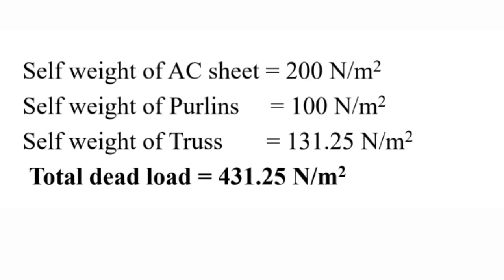This is the self-weight of the AC sheet roofing material, which is 150 N per m². Adding the self-weight of the truss as well, we compile the total dead load by summing these components.